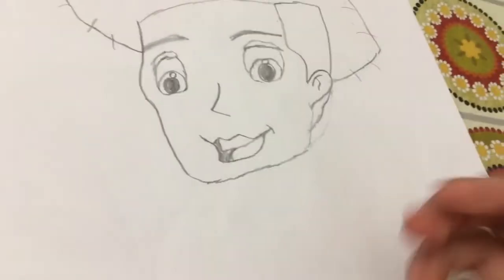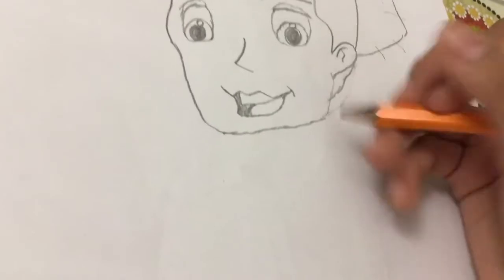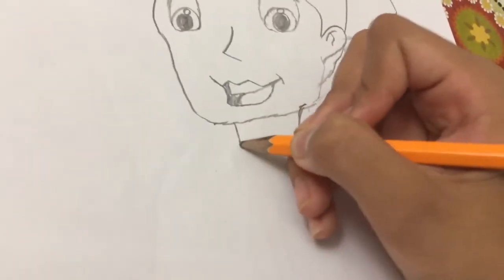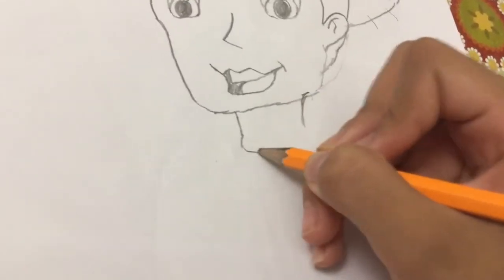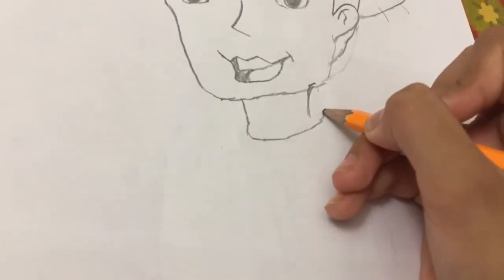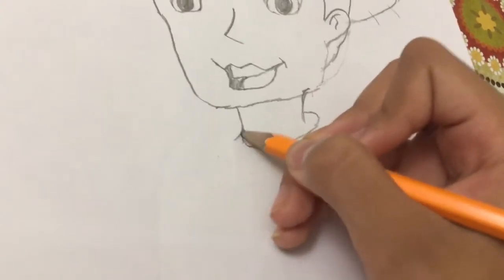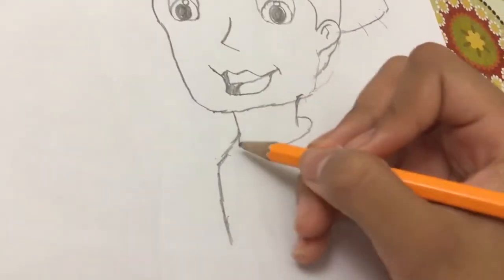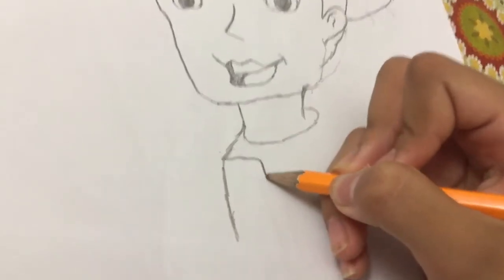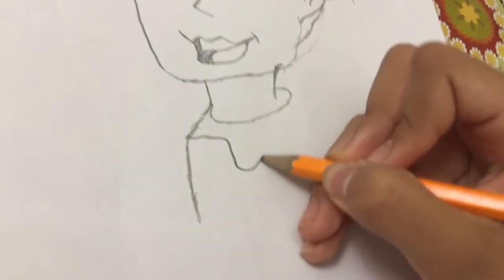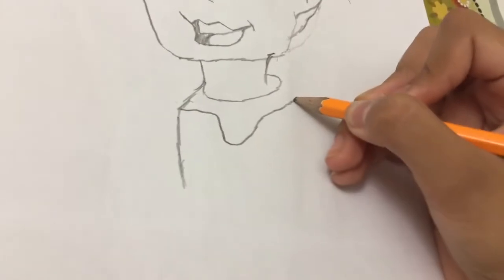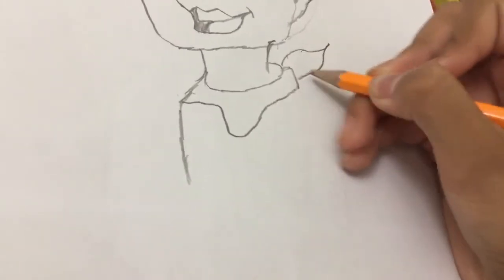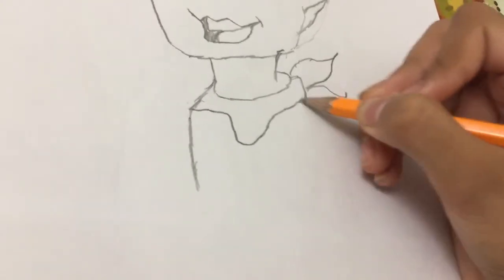Now, for his body. I'm going to make his neck. Like this. And another part of his neck coming from here. And like this. Then come out. And his collar. Like this. Comes out. And in.